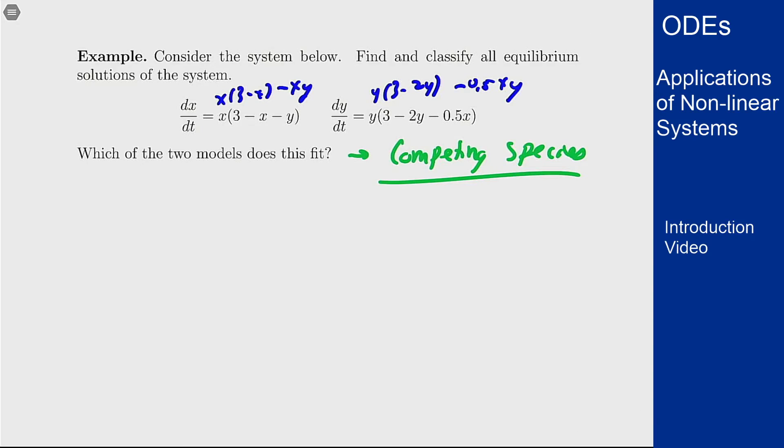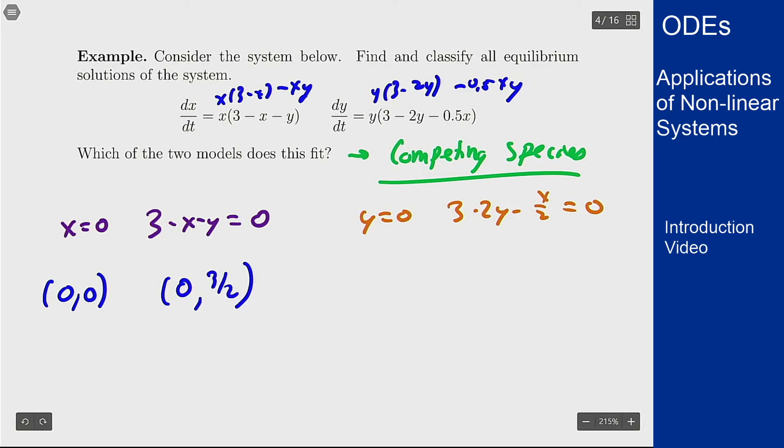Let's look at the equilibrium solutions here. What do I get for my solutions? Well, from the first equation I get either x equals 0 or 3 minus x minus y equals 0. And from the second I get y equals 0 or I get 3 minus 2y minus x/2 equals 0. So I can see three points right off the bat: I'm going to get (0, 0), I'm going to get x equals 0, plugging in 0 over here gets 3/2 for y. I get y equals 0 for the second equation, plugging into the first gets me x being 3.